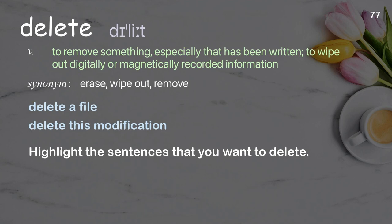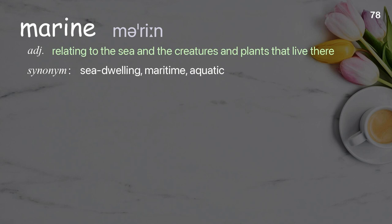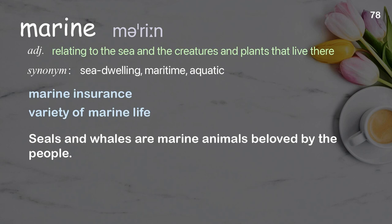Highlight the sentences that you want to delete. Marine: relating to the sea and the creatures and plants that live there. Examples: marine insurance; variety of marine life. Seals and whales are marine animals beloved by the people.